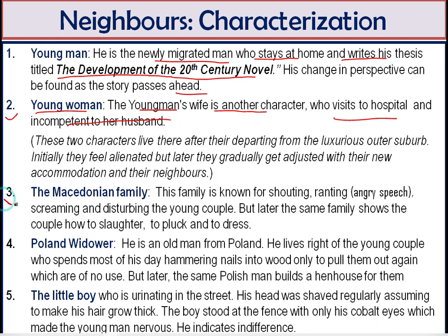The third character is the Macedonian family. This family is known for shouting, ranting — delivering long angry speeches — and screaming, disturbing the young couple. But later the same family shows the couple how to slaughter, pluck, and dress. In the beginning, the Macedonian family is found disturbing to the newly migrated couple, but later we find they are very helpful to the young man and young woman.